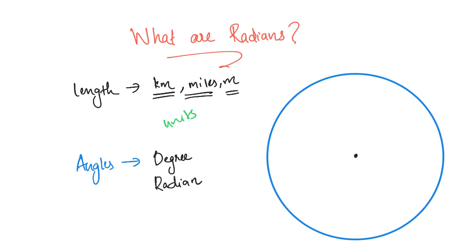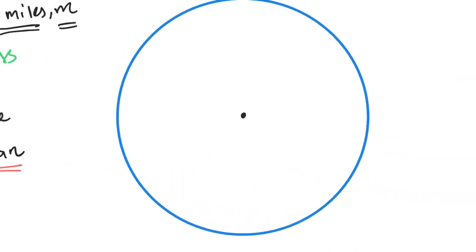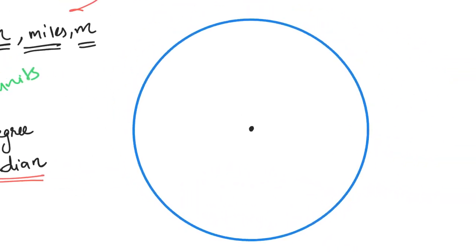What is radian? How do we convert degrees and radians? This is what we learn in this short video. So, let's consider a circle.